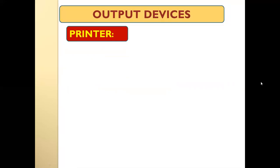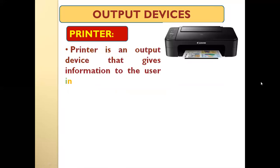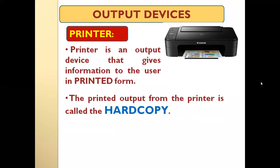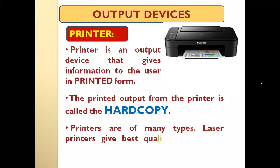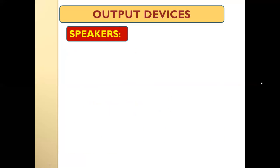The next output device we will study is the printer. A printer is an output device that gives information to the user in printed form. While the monitor displays the output as a soft copy, the printer gives us the output in printed form, which is known as the hard copy. Printers are of many types, and among them, laser printers give the best quality printouts at the fastest speed.